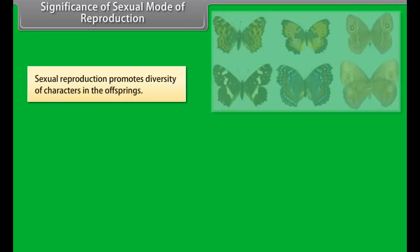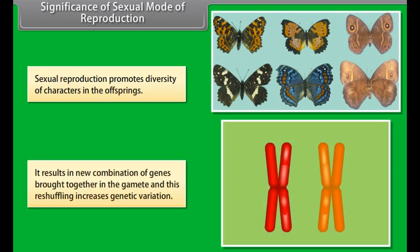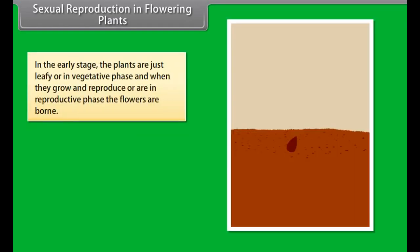Sexual reproduction promotes diversity of characters in the offspring. It results in new combinations of genes brought together in the gamete, and this reshuffling increases genetic variation. It plays a prominent role in the origin of new species by combining DNA from two individuals during reproduction.